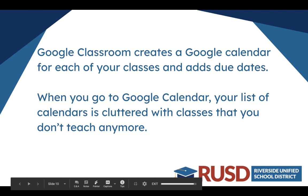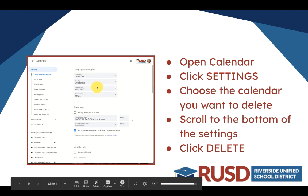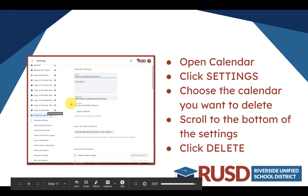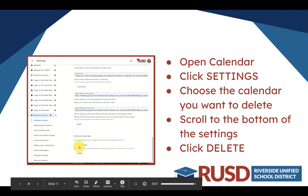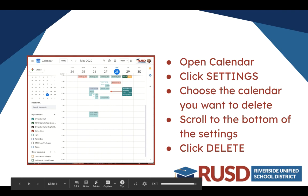So let's go ahead and delete the old calendars that we do not need. Open Google Calendar and click on Settings. Choose the calendar you want to delete and scroll to the very bottom of the settings. Here we chose a distance learning calendar, scrolled all the way down to the bottom, clicked Delete, and that calendar will be permanently deleted from your calendar list.